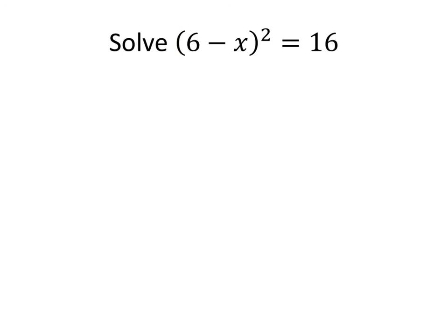Let's do another one real quick. Again, the equation has to be set up in a very specific way — it has to look like some quantity squared equals some number. Otherwise, this method isn't really going to work. In this case, we can take the square root of both sides. On the left-hand side, we get 6 minus x, and on the right-hand side, we get plus or minus the square root of 16, which is 4.